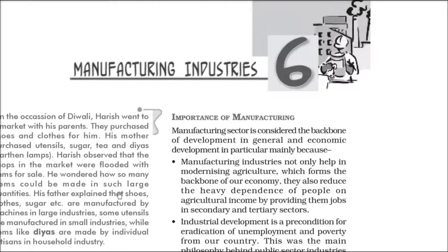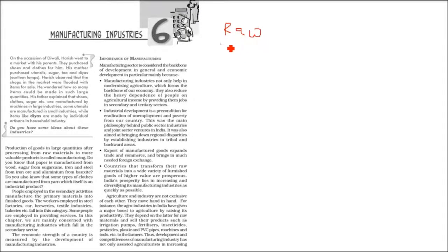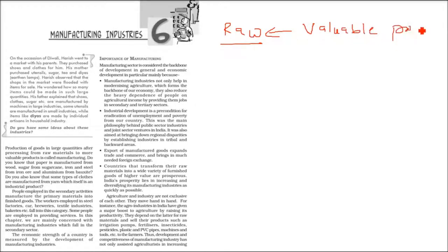What is manufacturing? Whenever there is a raw material, the raw material is not useful to us directly. If I provide you bauxite, you will not be able to appreciate it that much. But when some processing is done on this raw material and it is made into a valuable product, this is called manufacturing. The production of goods in large quantities after processing from raw materials to more valuable products is manufacturing. For example, paper from wood, sugar from sugarcane, iron and steel from iron ore, and aluminium from bauxite.